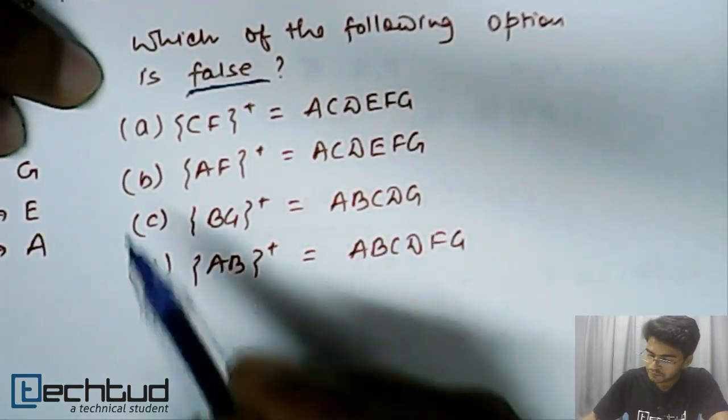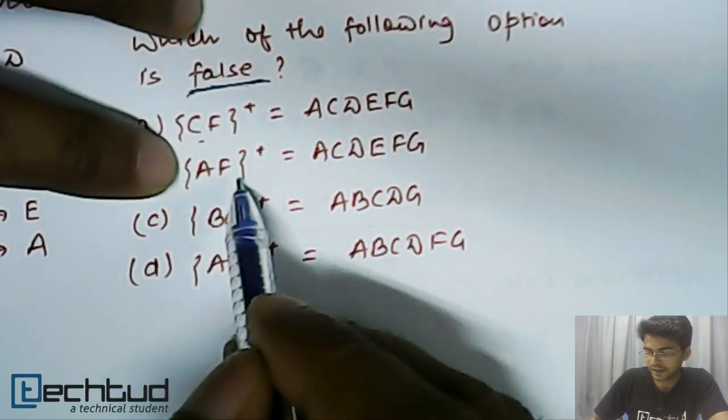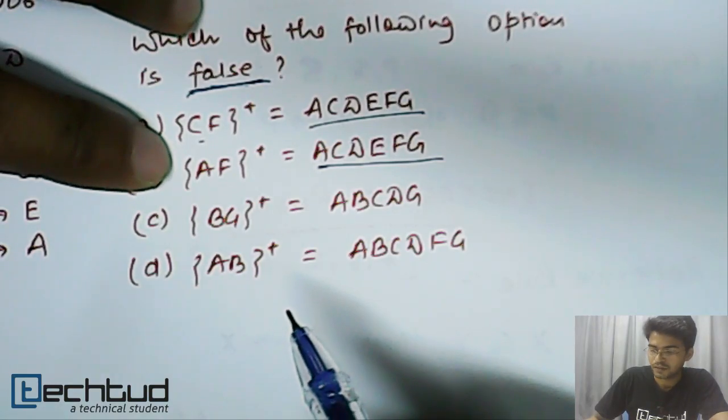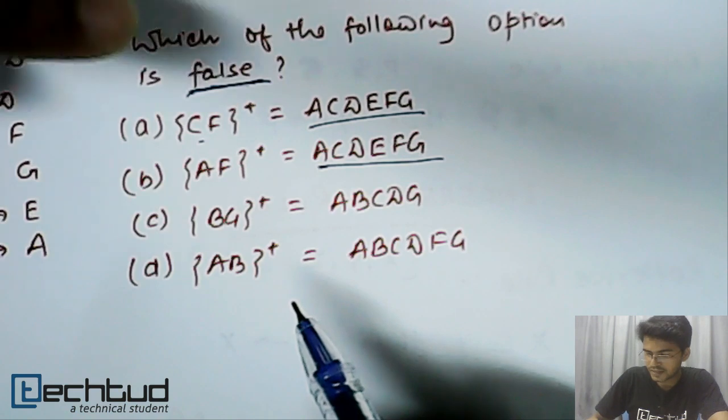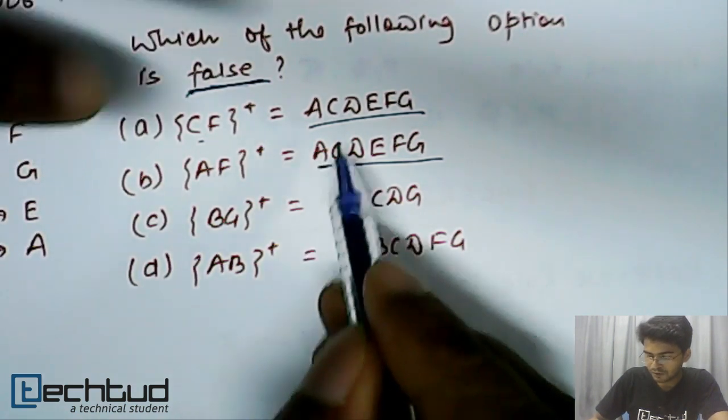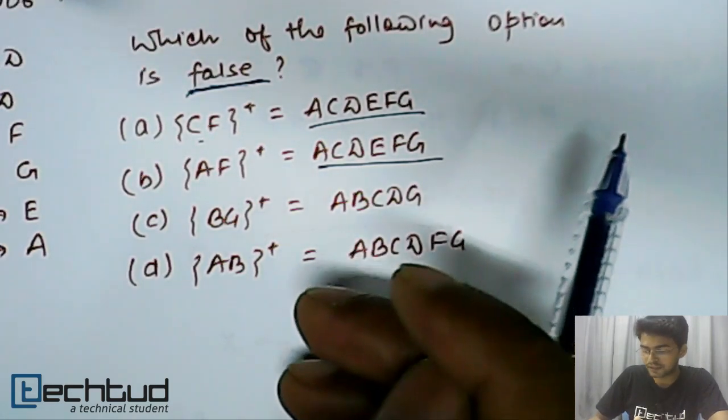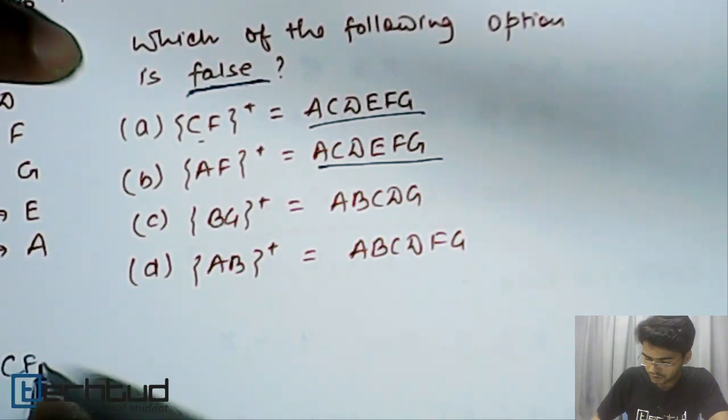If you see for CF plus and for AF plus, that is closure of CF and AF, they both are same. So, somehow intuitively you can notice that maybe one of them is false. It may not be true but why not start with them.